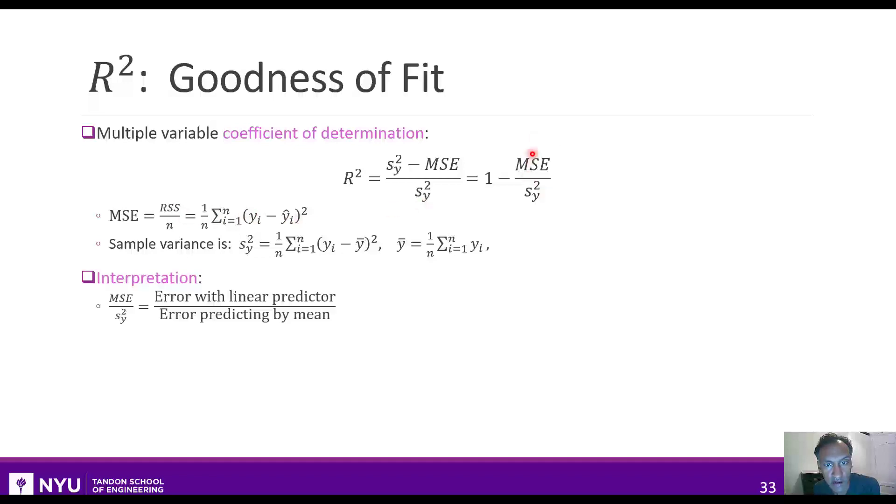Now, this quantity has a simple interpretation. First, let's look at this fraction here. This fraction you can think of as the numerator is the error with the linear predictor, because it's the difference between the sample's true value and the predicted value. The denominator, which is the sample variance, is just the variance or the error assuming you're predicting with just the mean value. So it's kind of the relative error of the mean squared error to the variance of the data. Given this, you can think of the r squared value from looking at this expression here. It's the reduction of the variance in using the linear model relative to the original variance.